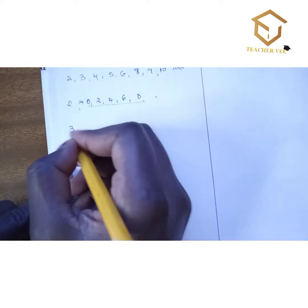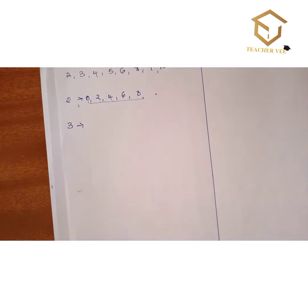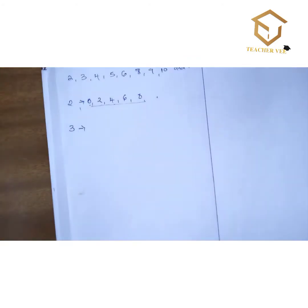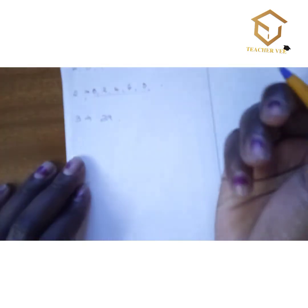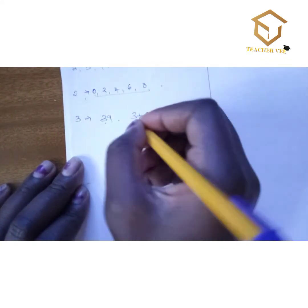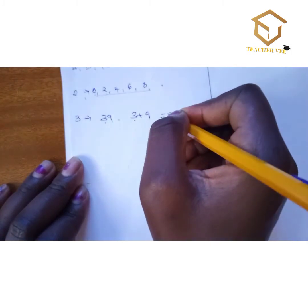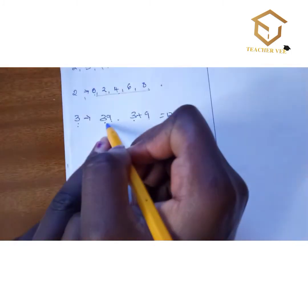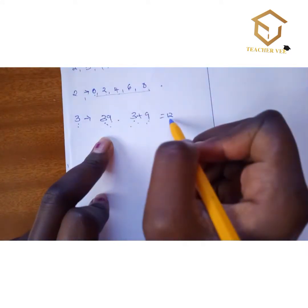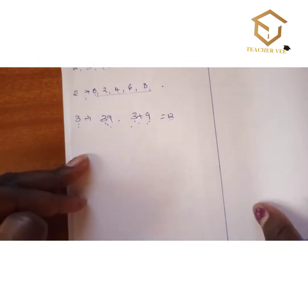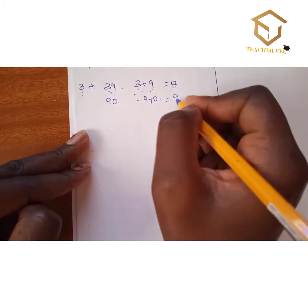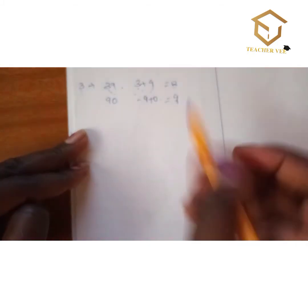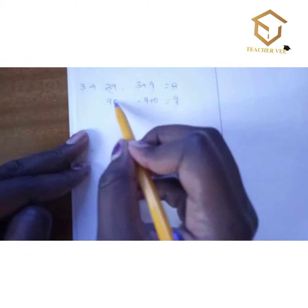Now let's look at divisibility by 3. A number is divisible by 3 if the sum of its digits is divisible by 3. For example, 39: 3 + 9 = 12, and 12 is divisible by 3, so 39 is divisible by 3. Another example: 90 — 9 + 0 = 9, and 9 is divisible by 3, so 90 is divisible by 3.